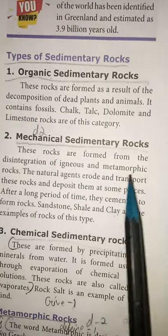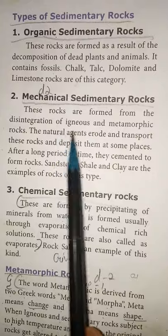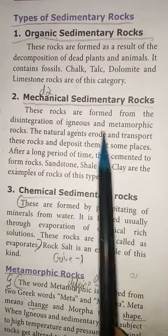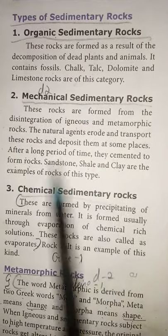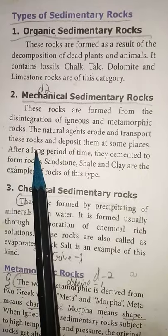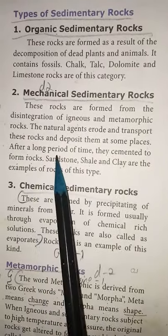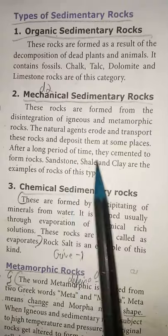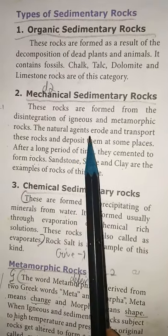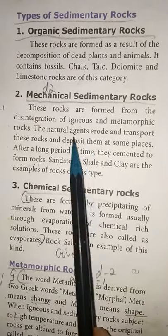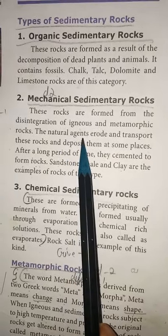Second, mechanical sedimentary rocks. These rocks are formed from the disintegration of igneous and metamorphic rocks. Natural agents erode and transport these rocks and deposit them at some places. The natural agents include rainfall, flood, and temperature.